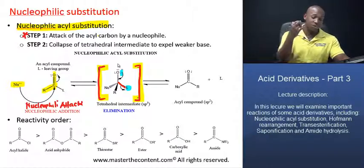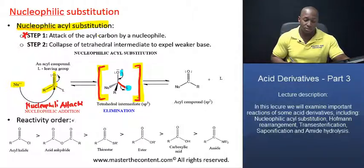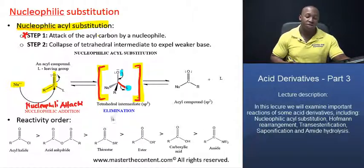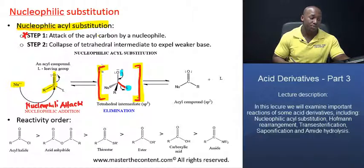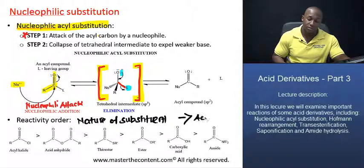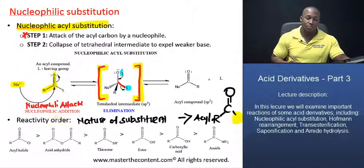I am also going to remind you of the reactivity order of this class of organic compounds. Which is the most reactive, which is the least reactive, and why? The reactivity order of nucleophilic acid derivatives is basically determined by the nature of the substituent that is bound to the acyl group. Remember what the acyl group is? That is our acyl group right here. Whatever is bound to that position, the carbon of the acyl group, is pretty much what determines the reactivity order of the substituent.